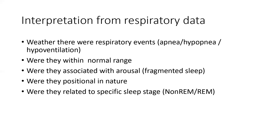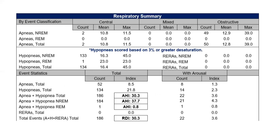What information do we get from the respiratory data? Whether respiratory events were present, the most important information. Were they in the normal range or suggesting sleep-related breathing disorders? Were they associated with arousals? Were they associated with positional change, such as increasing in the supine position? Were they related to specific sleep stages, such as increasing during REM? It is commonly seen that sleep-related breathing disorders are worst in supine REM, but this will be confirmed once the report is in the clinician's hands. An AHI of 30.3 would suggest severe sleep apnea.